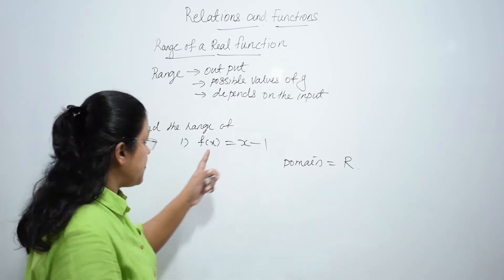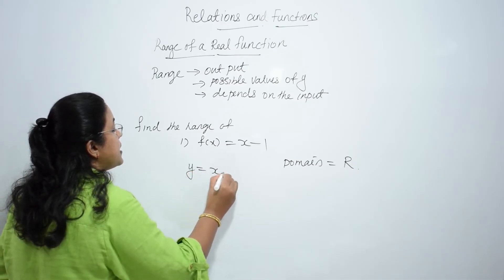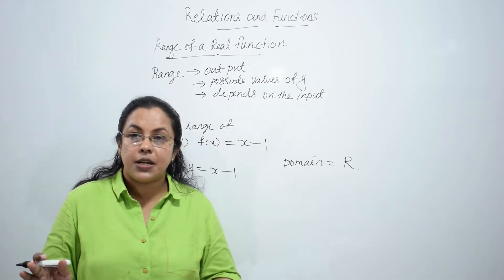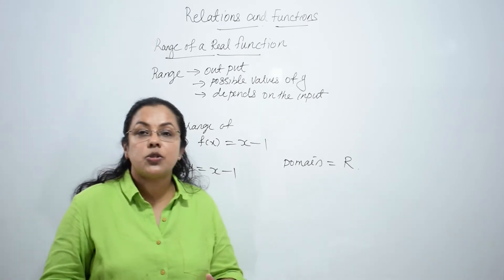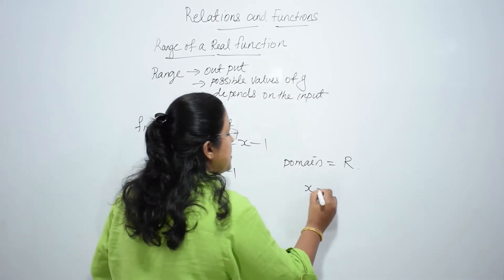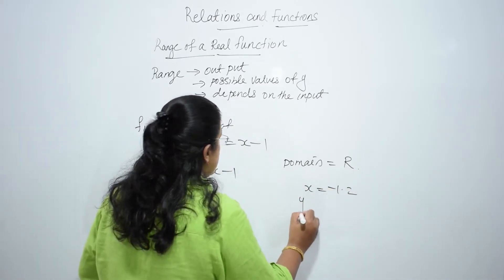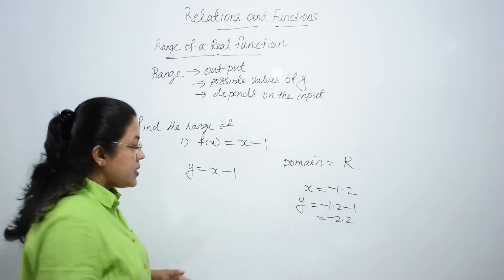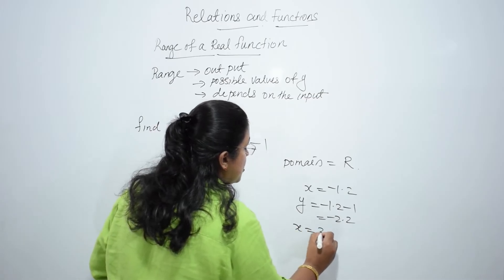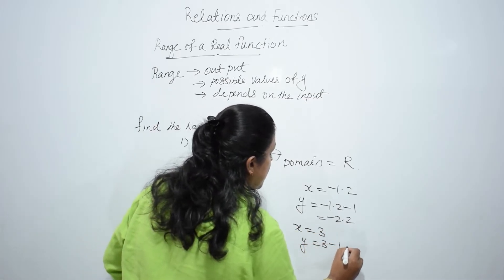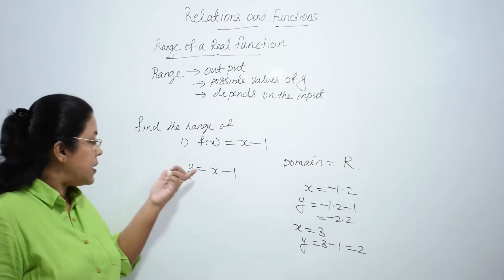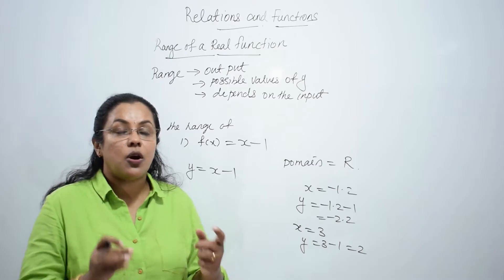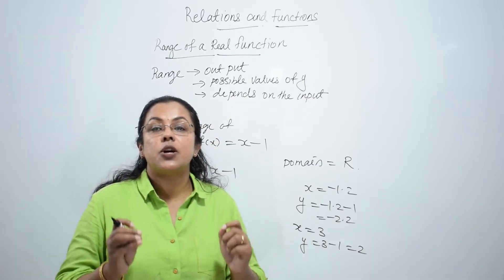Now, what is its range? In place of f(x), we can write it as y. So y = x minus 1. What are the possible values of x? Set of real numbers. If we put x = -1.2, then y = -1.2 - 1 = -2.2. If x = 3, then y = 3 - 1 = 2. So we can see that range of f(x) is nothing but the set of real numbers itself.